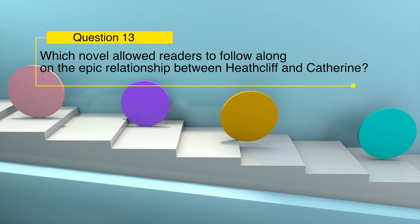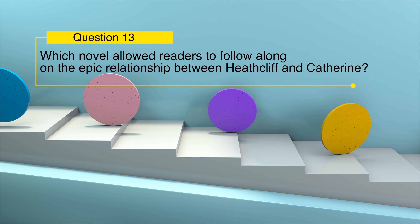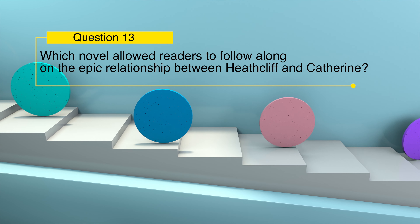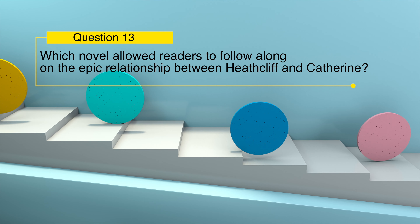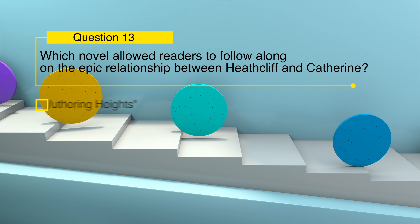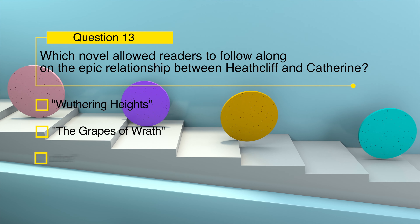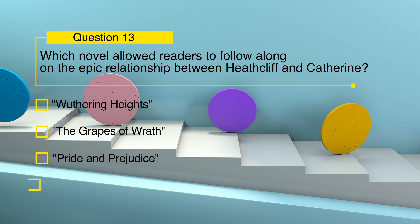Which novel allowed readers to follow along on the epic relationship between Heathcliff and Catherine? Wuthering Heights, The Grapes of Wrath, Pride and Prejudice, or Jane Eyre?